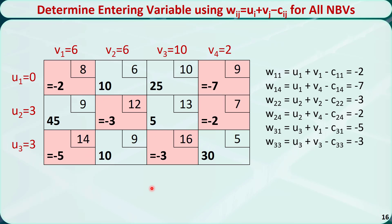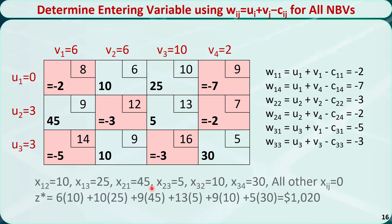The optimal solution is: x12 = 10, x13 = 25, and so on. The objective function is z = 6×10 + 10×25 + 9×45 + 13×5 + 9×10 + 5×30, which is equal to 1020.